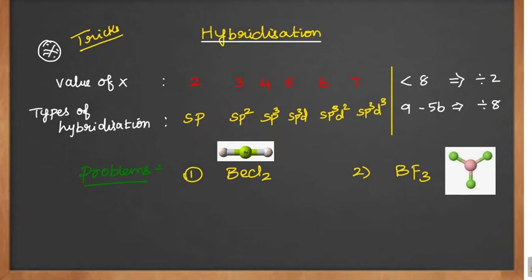Let's find out the hybridization for the first molecule, beryllium chloride. Beryllium has atomic number 4, electronic configuration 1s2, 2s2 — so 2, 2 — and the outermost electron is only 2. For chlorine, atomic number is 17, so 2, 8, 7, and the outermost electron is 7.